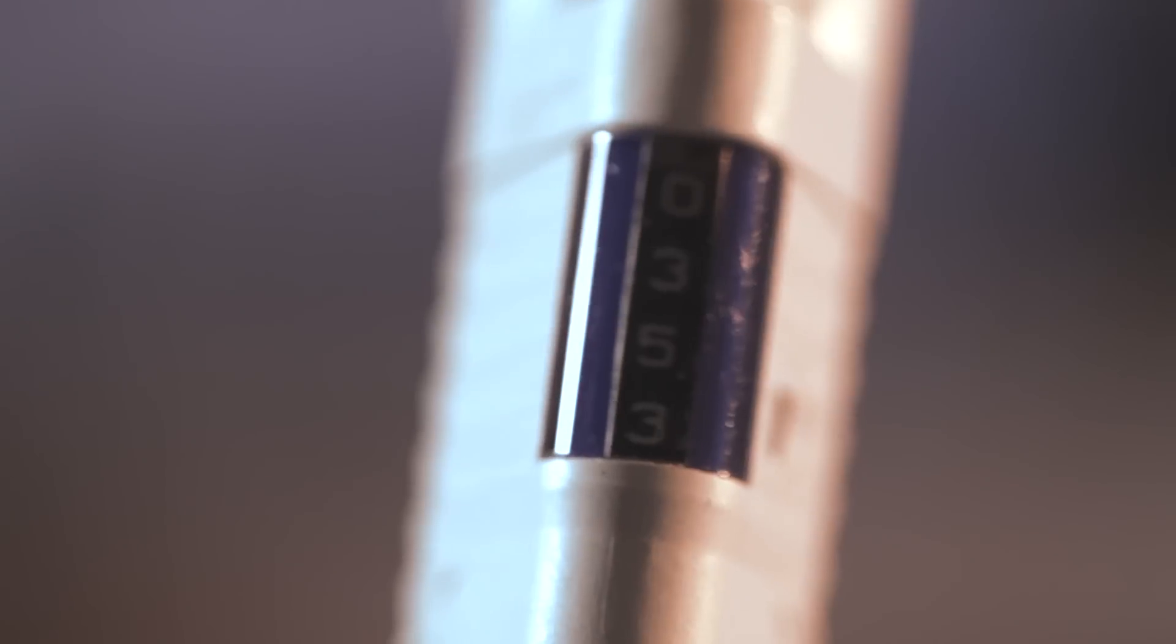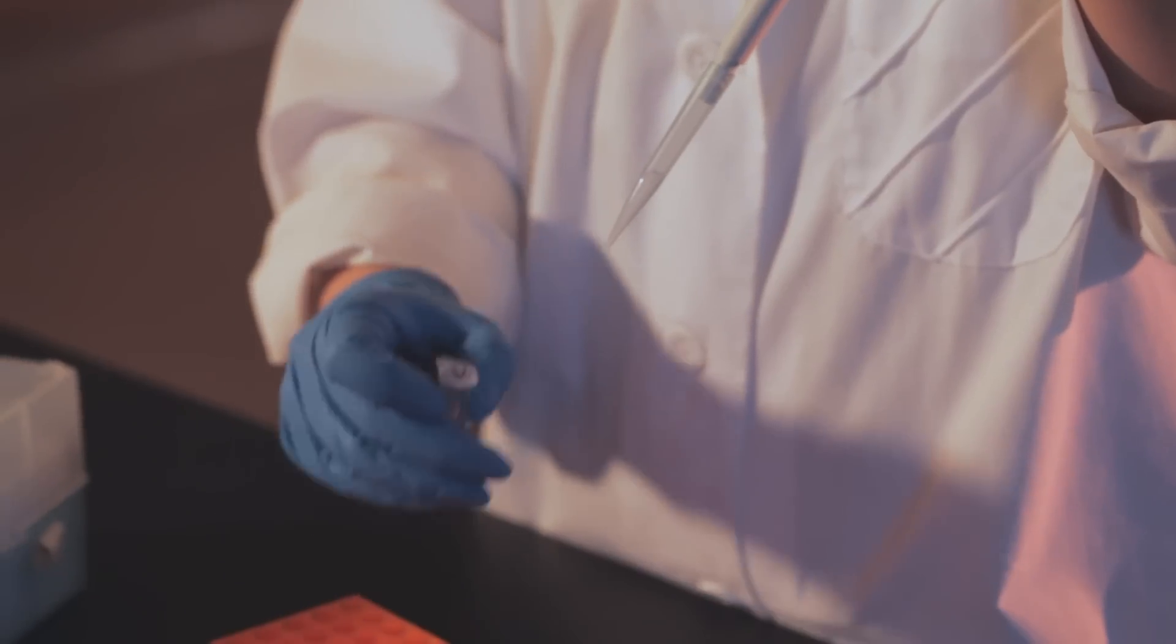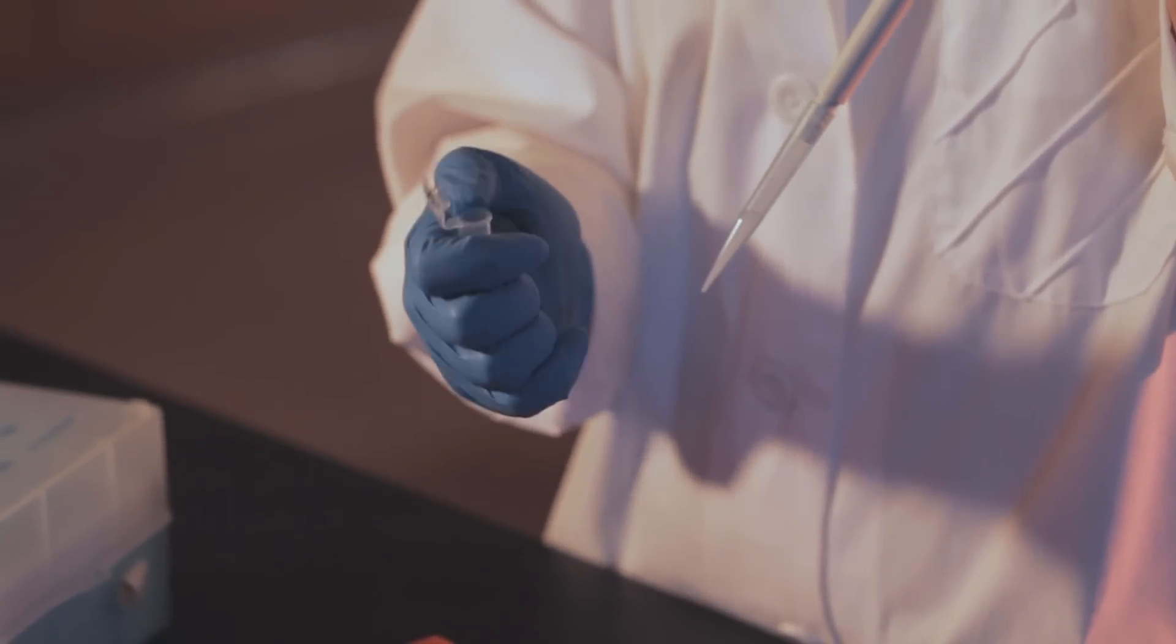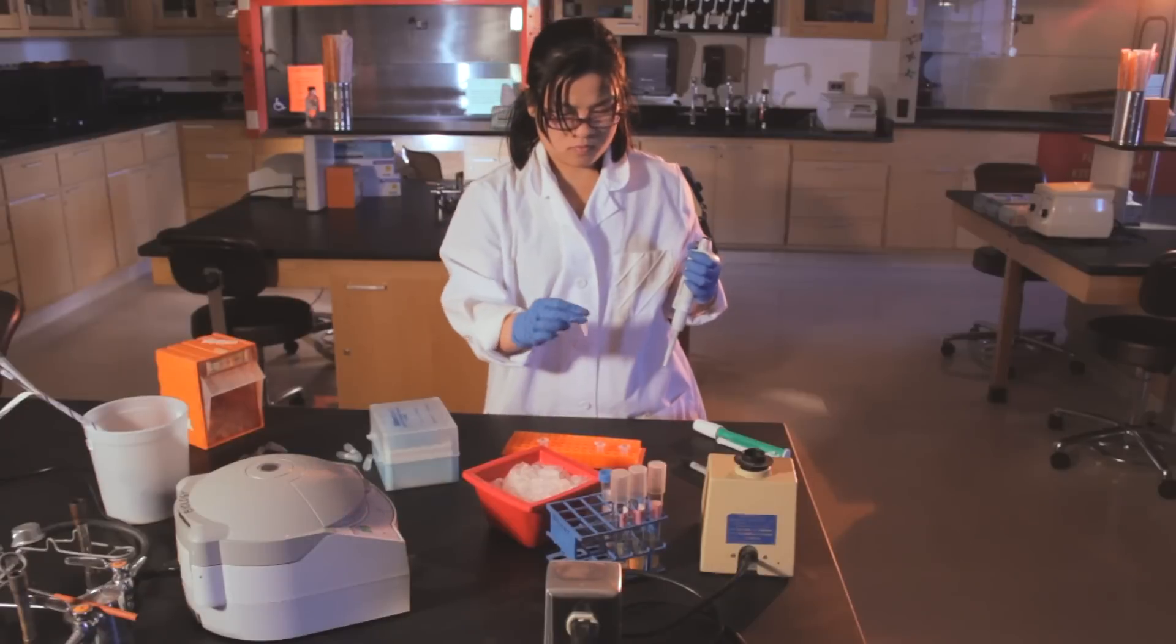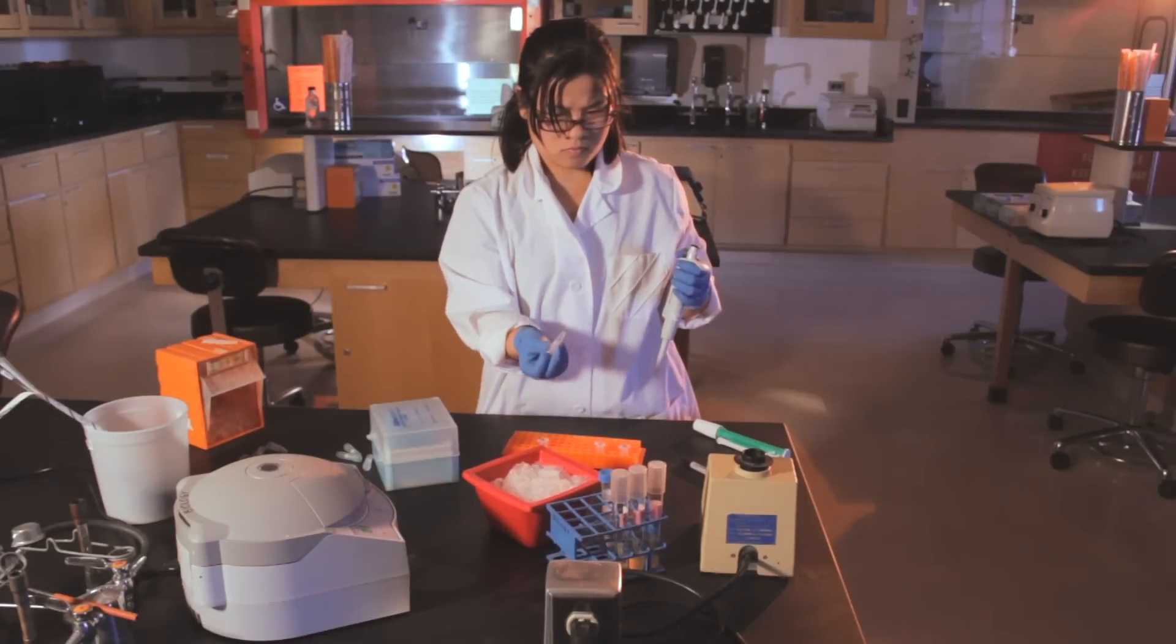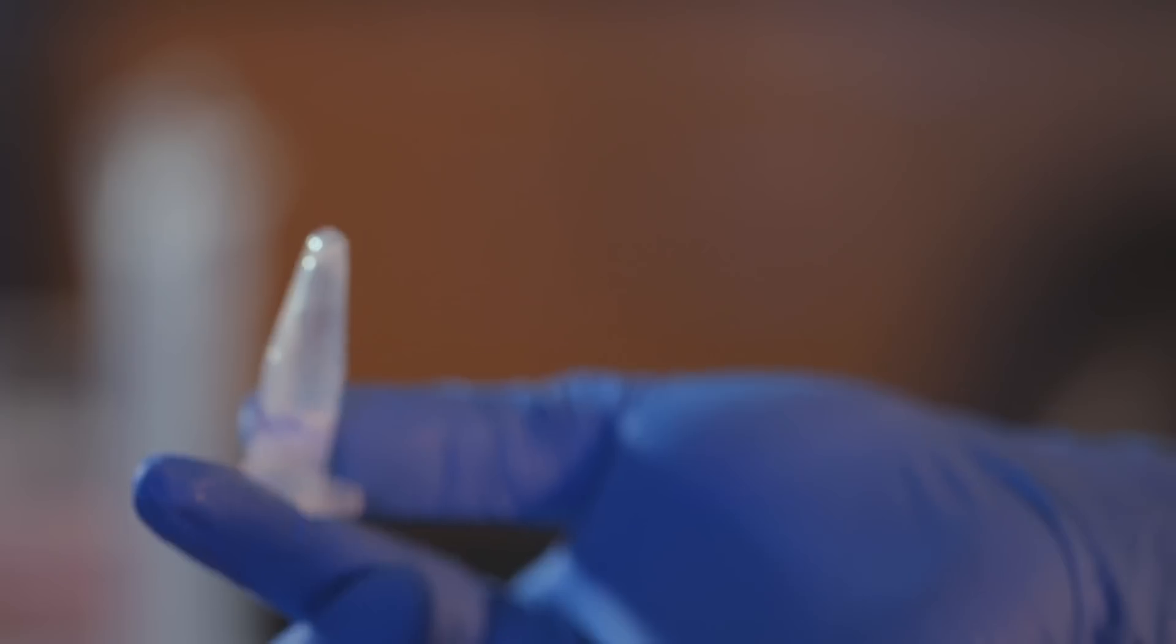Working quickly, add 350 microliters of neutralization buffer and mix immediately and thoroughly by inverting the tube 4 to 6 times. Do not vortex. The solution should become cloudy. If using a Qiagen kit, mix until all traces of blue are gone and the solution is colorless.